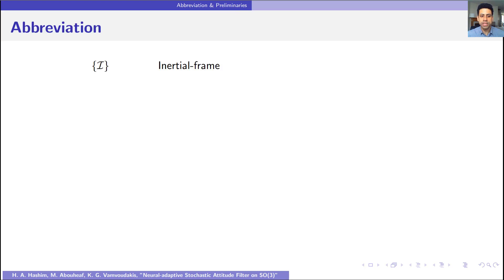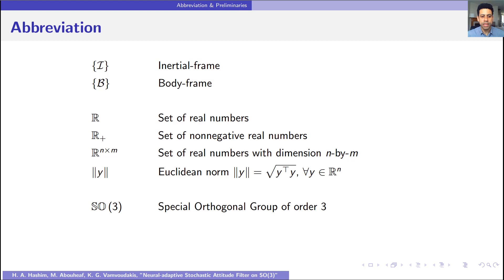In this presentation, I denotes inertial frame, B denotes body frame, R is the set of real numbers, R plus is the set of positive real numbers, R n by m is the set of real numbers with dimension n by m, SO3 denotes the special orthogonal group of order 3 satisfying the following properties, and R denotes rigid body's orientation, which is commonly known as attitude.